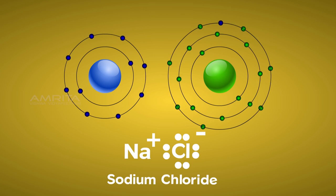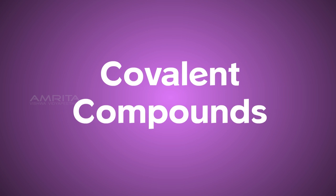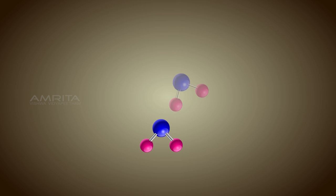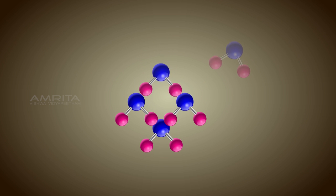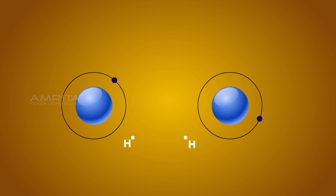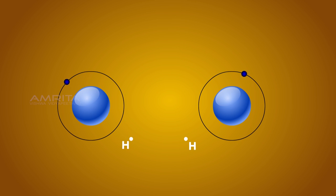Now let's try to understand covalent or molecular bonds. Covalent compounds contain discrete molecules held together by sharing electrons. The simplest example is the water molecule.